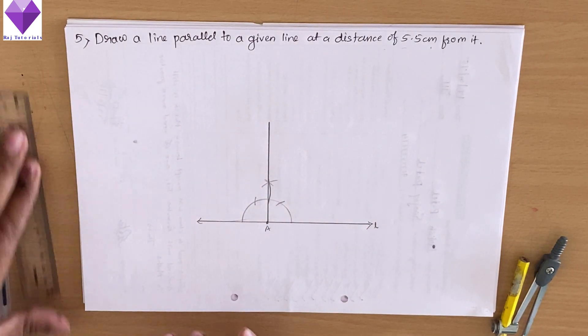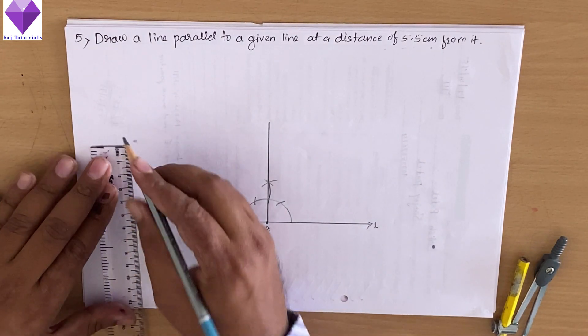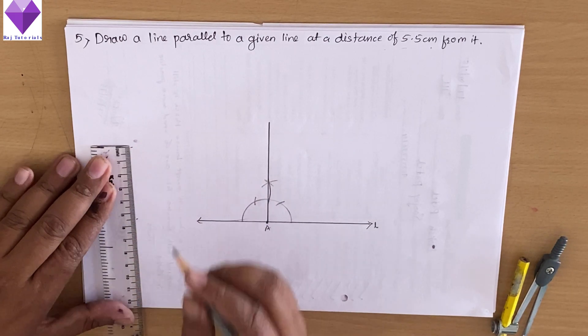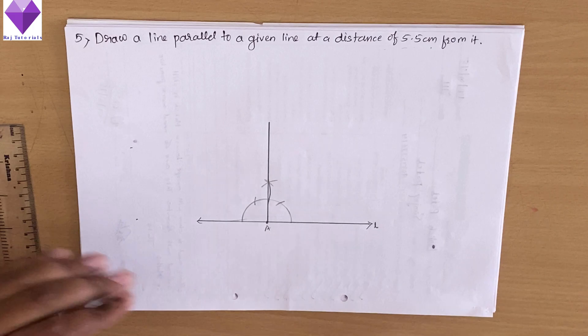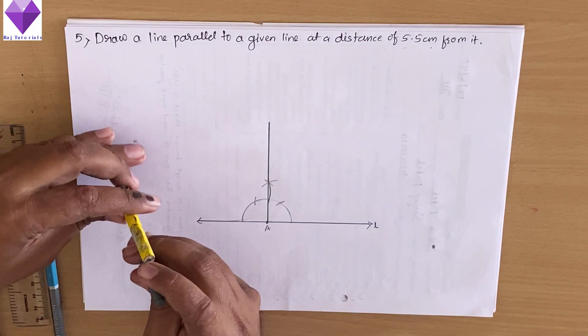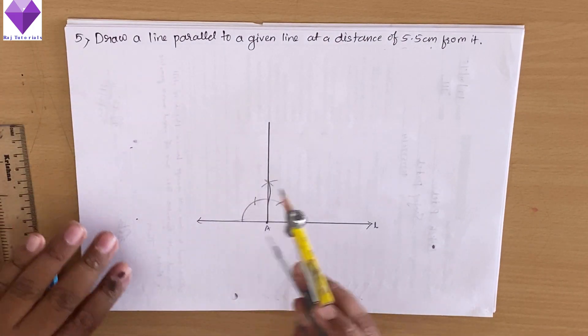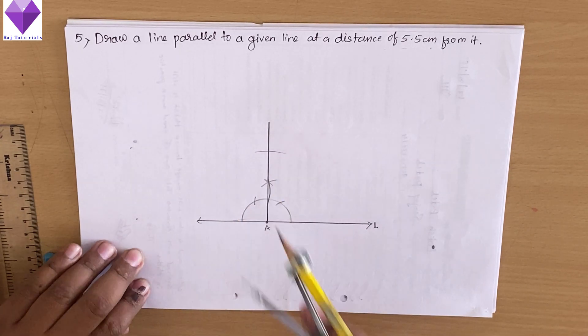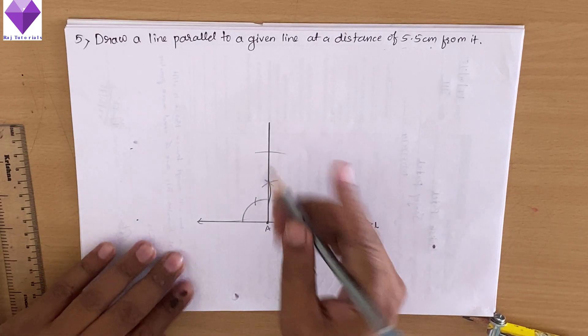Now on this I need a 5.5 centimeter point, so I will mark 5.5 centimeters first and I will measure it in the compass. Now with A as center, I will mark this 5.5 centimeter. Let us give it the name B.